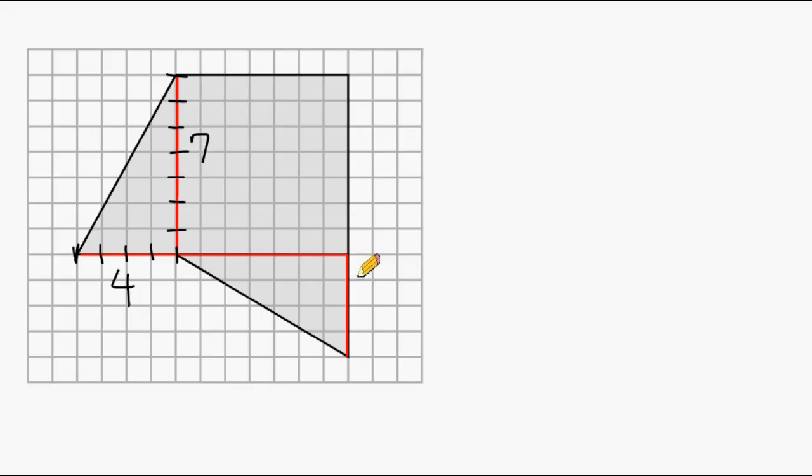This triangle here also has a base of 4 and a height of 7. Now notice that our square shares the side length with this triangle. So we have a 7 by 7 square. When finding the area of any square, just multiply one side by itself or square a single side. So 7 times 7, or 7 to the second power, is 49.